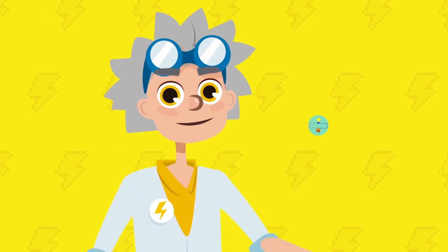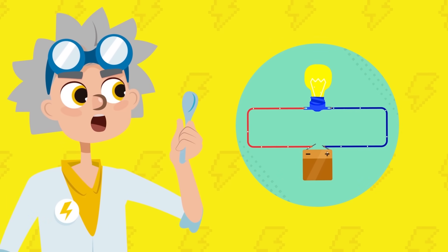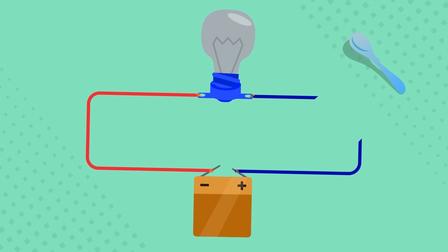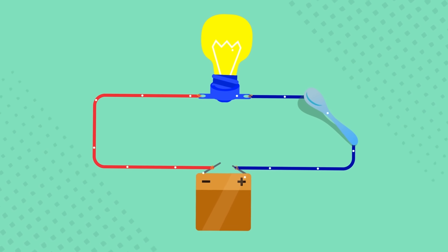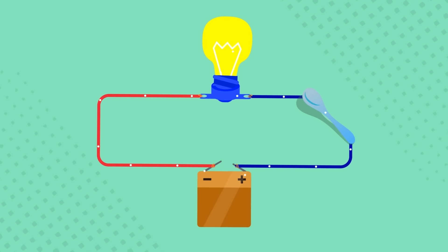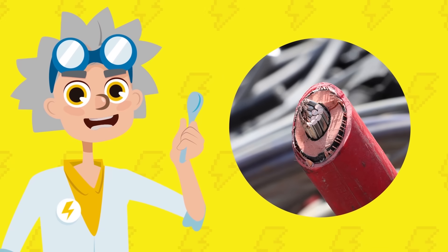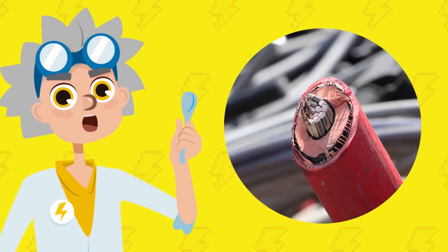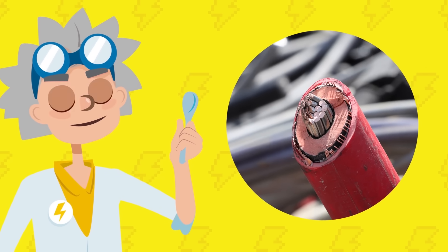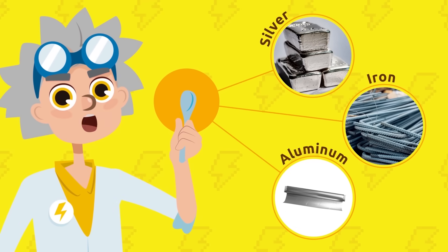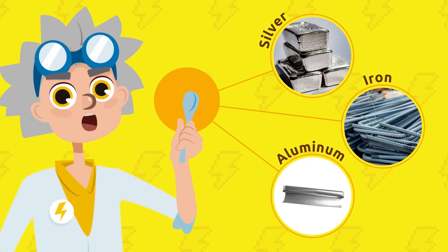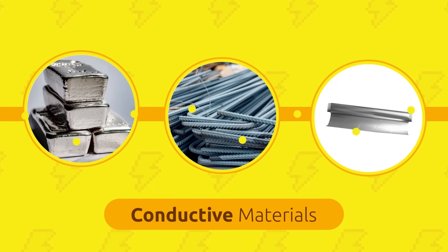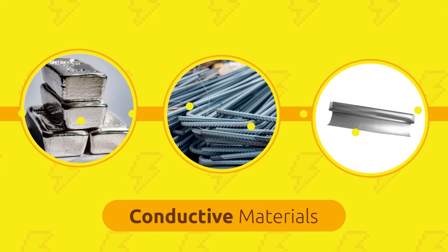Let's make this more interesting — what would happen if I added this spoon to the circuit? The light bulb came on! Just like the copper inside the wires, this spoon is made of metal, and metal is a great conductor of electricity. Silver, iron, and aluminum are examples of conductive metals. Conductive materials allow electrical charges to flow through them, making them the best materials to add to an electrical circuit.